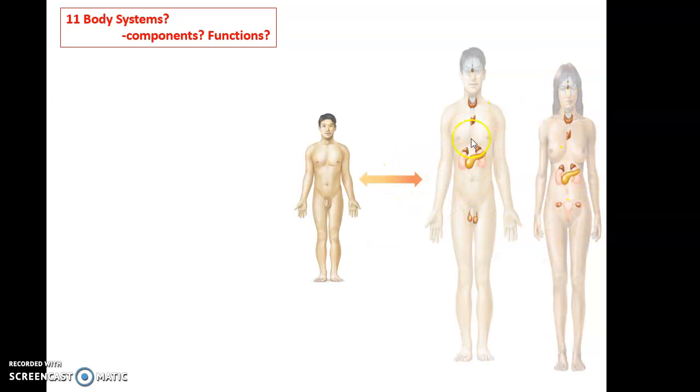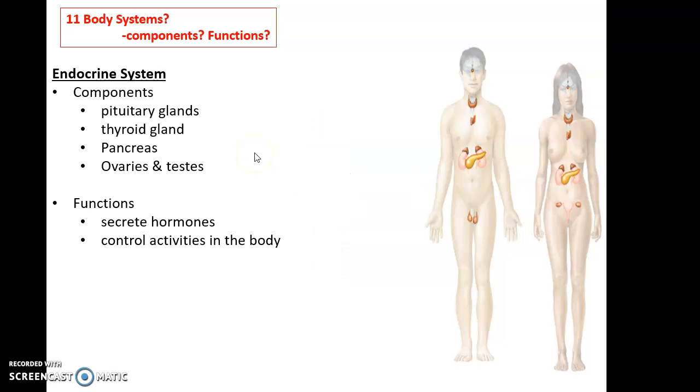Then we have this lovely system, slightly different between males and females. This system is the endocrine system. The endocrine system includes a hodgepodge of various glands and organs, such as the pituitary gland underneath the brain, the thyroid gland in the throat region, the pancreas in the abdominal cavity, the testes or ovaries, depending on which you have.